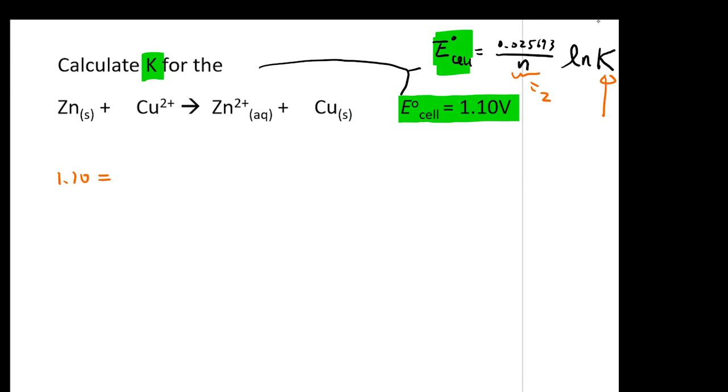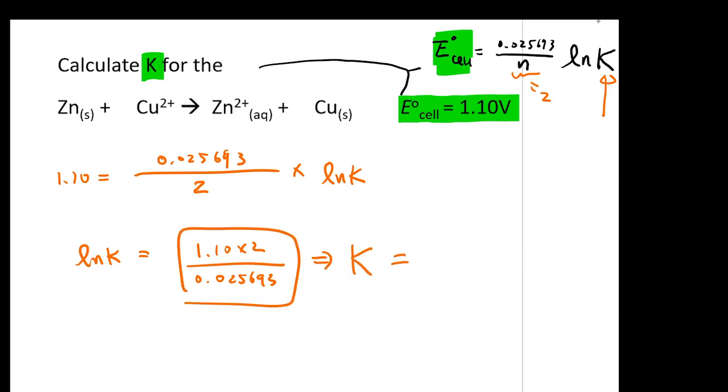you know that 1.10 is going to equal to 0.025693 divided by 2 times your natural log K. Therefore, your natural log K is going to equal to 1.10 times 2 divided by 0.025693. Therefore, your K is going to equal to 85.7. So your K is going to become exponential of 85.7. That's going to give you a number of 1.5 times 10 to the 37.